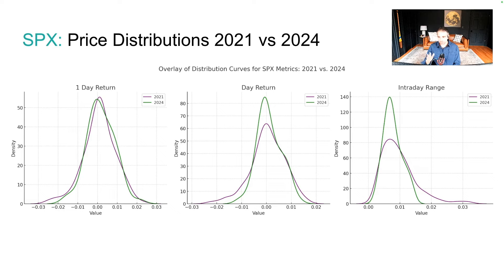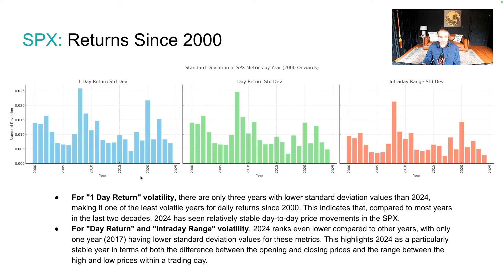This ties into correlation and other topics we're about to discuss. Looking at the standard deviation of returns, the intraday range is most interesting. 2017 had tighter ranges on a standard deviation basis, and other than that, 2017 and this year are real standouts in terms of how quiet they have been.